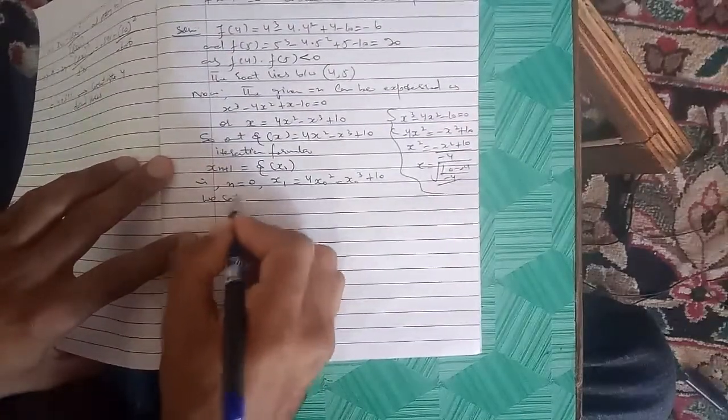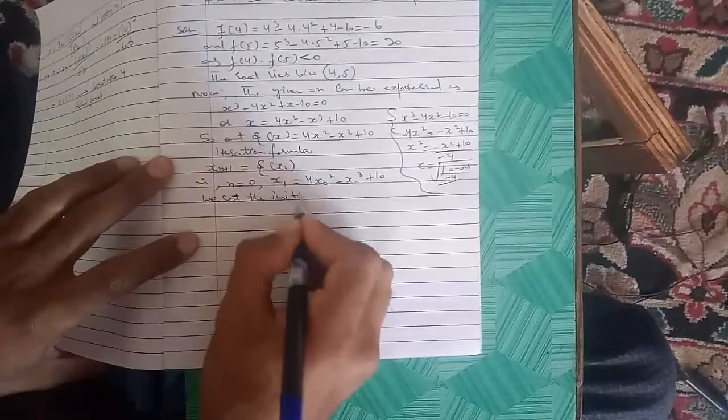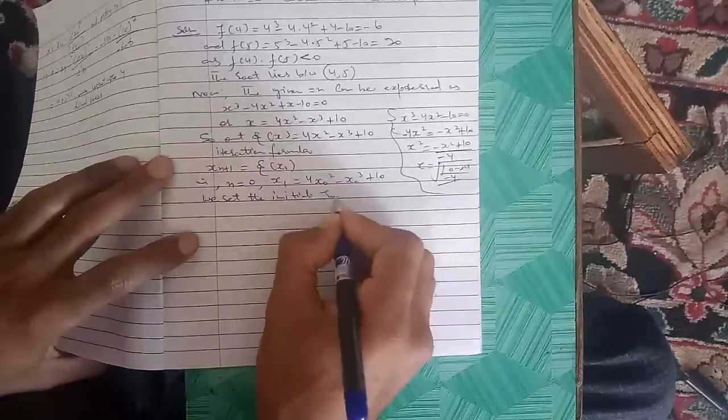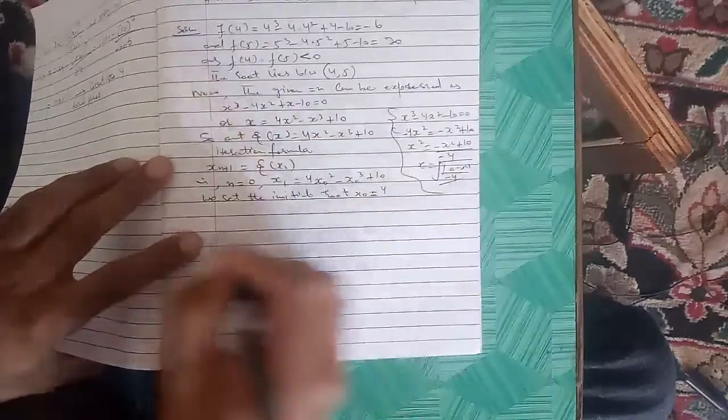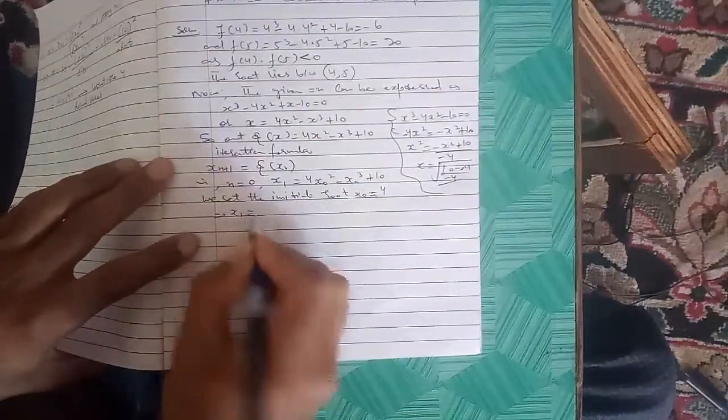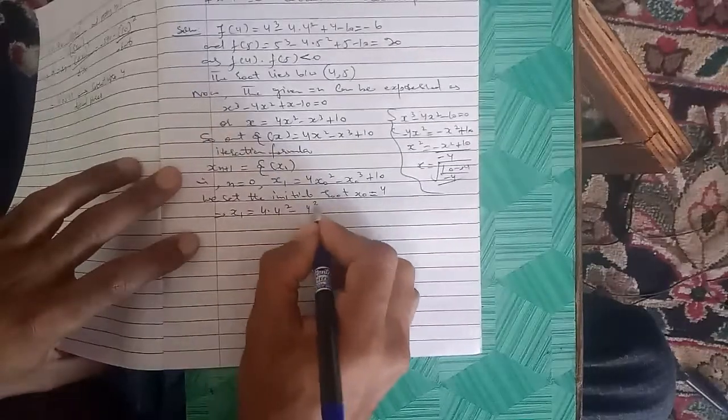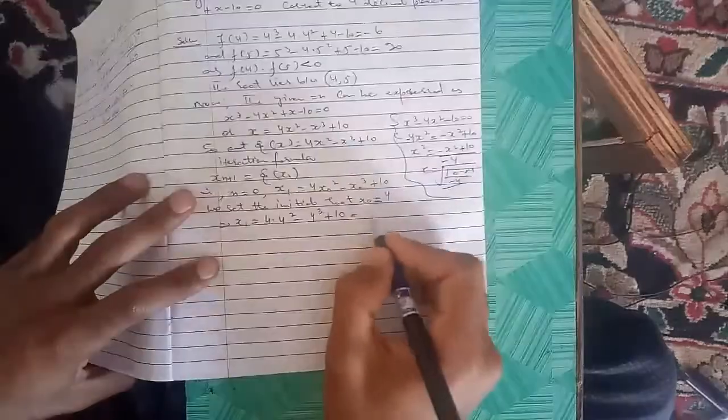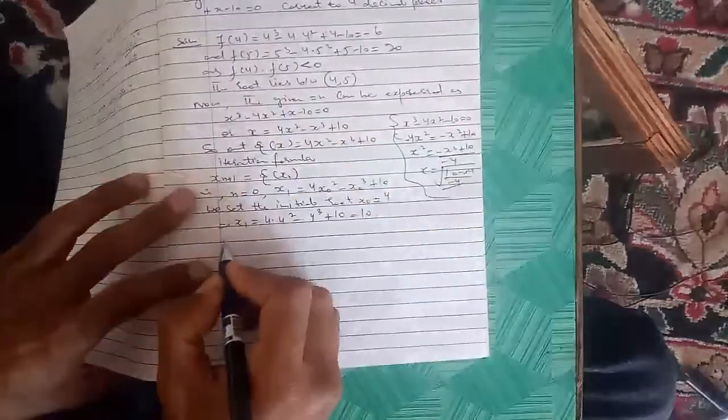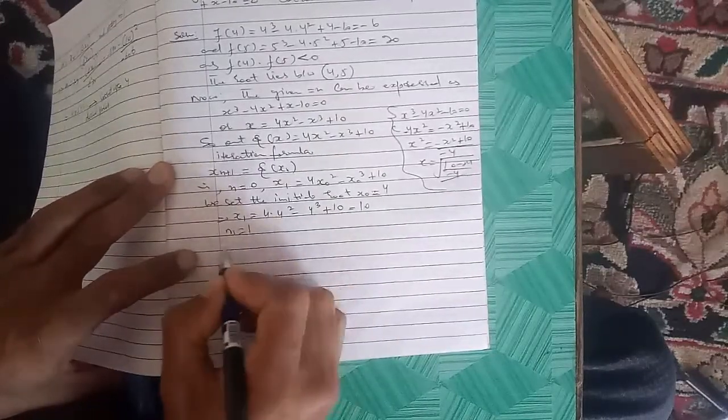We set the initial root x₀ equals 4, which implies x₁ equals 4(4²) - 4³ + 10, which equals 10.